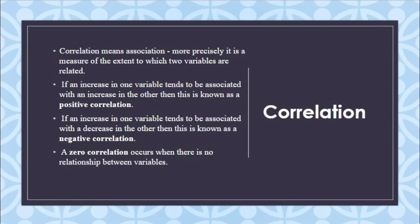Correlation means the association between two things — when two things go together or affect each other. More precisely, it is a measure of the extent to which two variables are related. There are three types: positive correlation (both variables increase or decrease together), negative correlation (one variable increases while the other decreases), and zero correlation (no relationship exists between the variables).